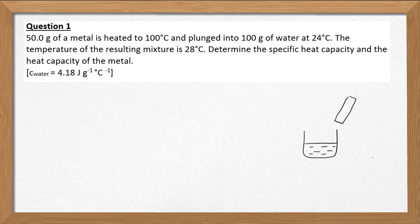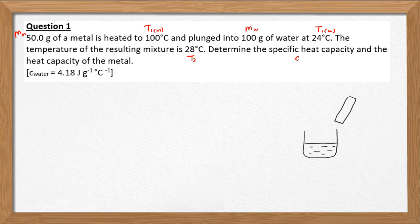For question 1, 50 grams of metal is heated to 100 degrees Celsius — this is the initial temperature for the metal — and plunked into the water. We have the mass of water and the initial temperature of water. The temperature of the resulting mixture is 28 degrees Celsius, which is the final temperature, the same for both metal and water. We need to determine the specific heat capacity and heat capacity of the metal, given the specific heat capacity of water.